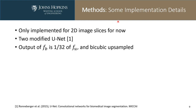For implementation details: first, we only implemented this idea for 2D slices, which could be extended to 3D images in the future. Second, we used two modified U-Nets for the image and the inhomogeneity respectively. Third, the output of the inhomogeneity network F_B is 1/32nd of the output of the image network F_U, and we used bicubic interpolation to upsample the output of F_B to enforce the slow variance of the inhomogeneity field.